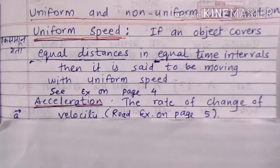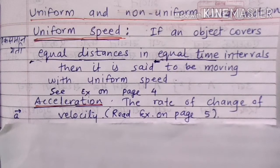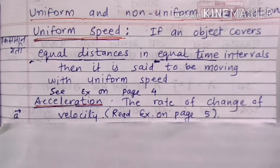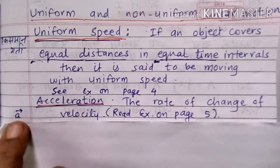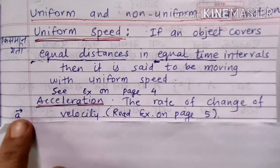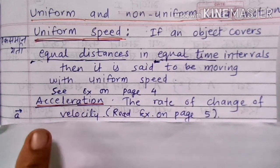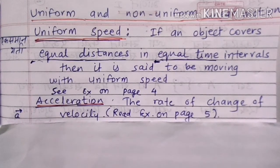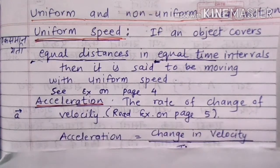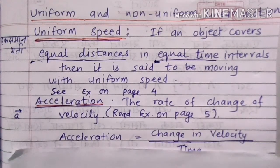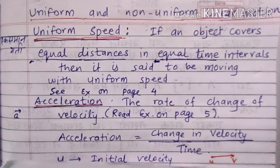What is meant by acceleration? Acceleration is the rate of change of velocity. It is denoted by A, with an arrow on A — that means acceleration is a vector quantity. It has magnitude as well as direction. The formula for acceleration is change in velocity upon time.